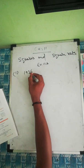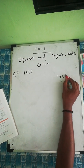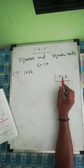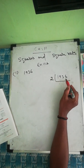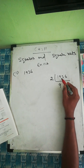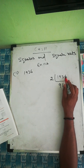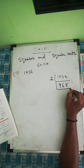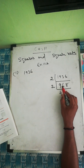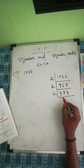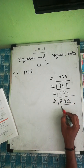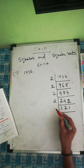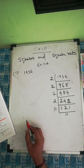The first number given is 1936. Prime factorization means we start from the smallest prime number, which is 2. Dividing step by step: 1936 ÷ 2, continuing until we reach 121, then 121 = 11 × 11.